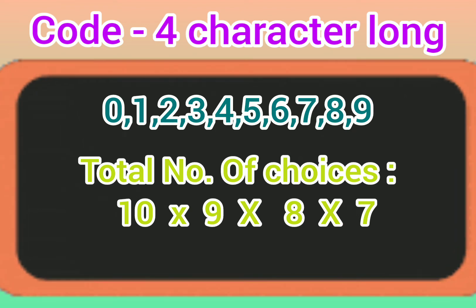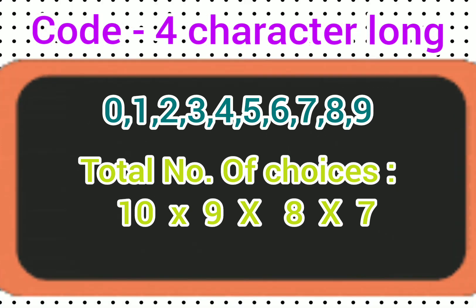So for first character there can be 10 possible numbers we can consider, that is from 0 to 9. And as repetition is not allowed, for second character there can be 9 possible numbers. For third character there can be 8 possible numbers. And for fourth, that is last character, there can be 7 possible numbers.